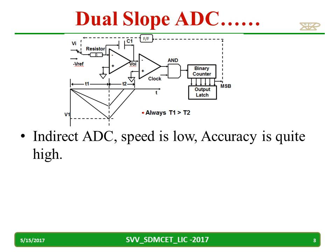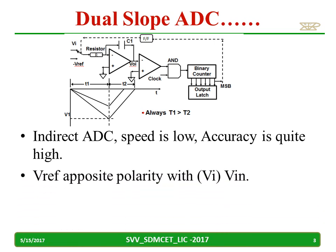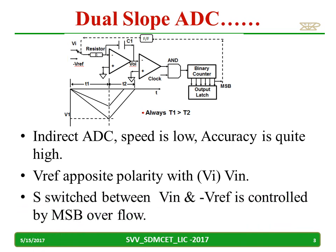Speed is low and accuracy is quite high. V reference is always of opposite polarity to VI — here we are taking VI positive and V reference as negative. The switch shown is switched between VI and V reference, which is controlled by the MSB overflow. MSB is the counter overflow; whenever overflow occurs, the switch will switch to V reference.